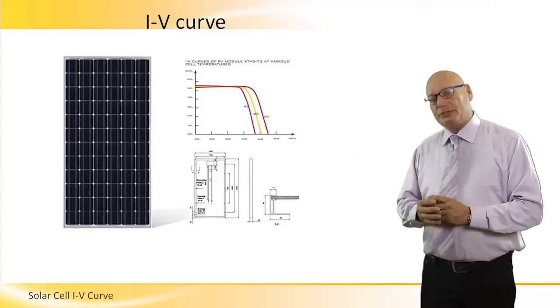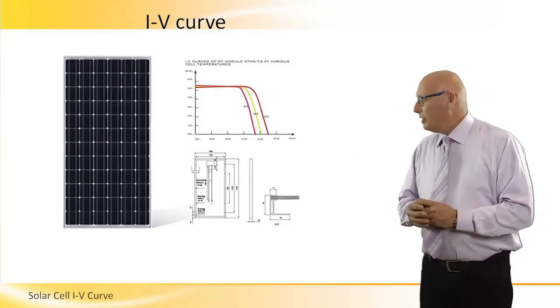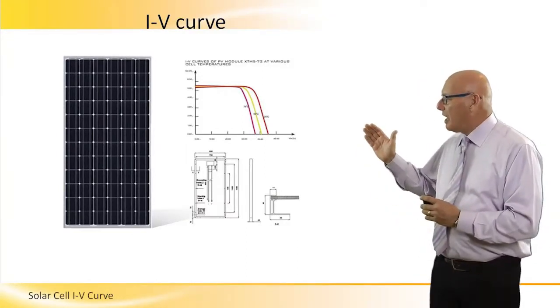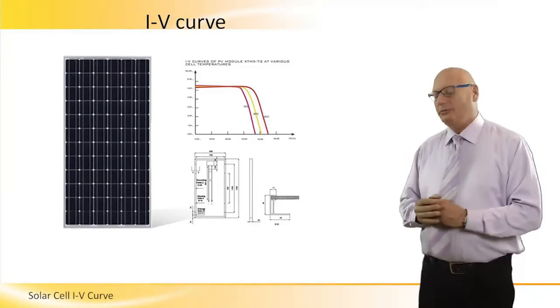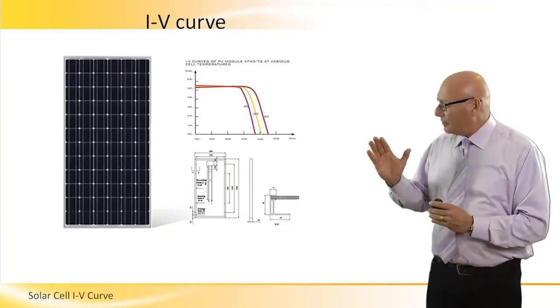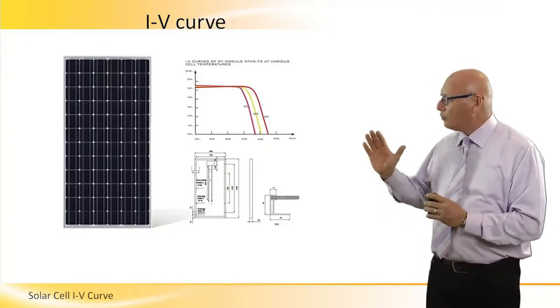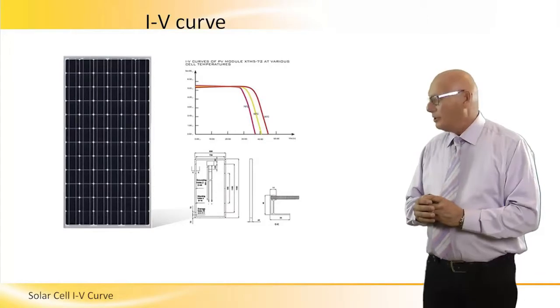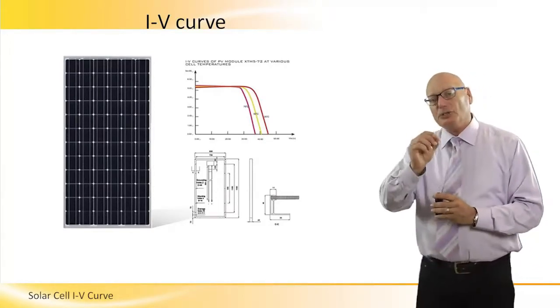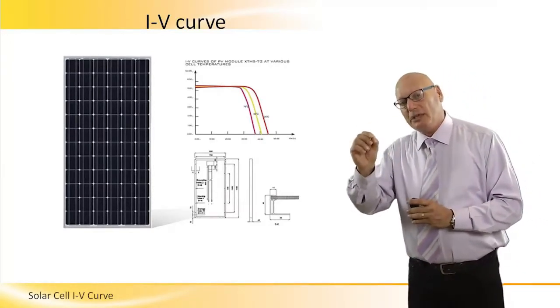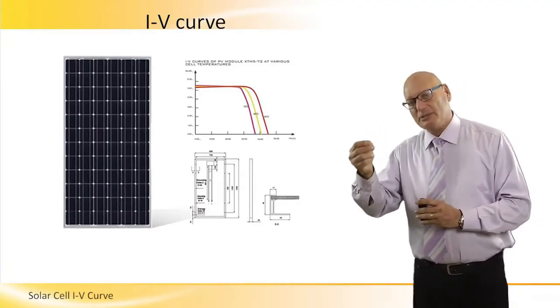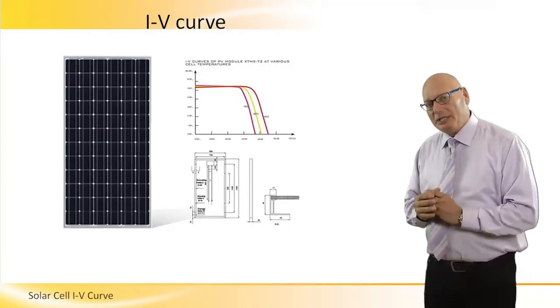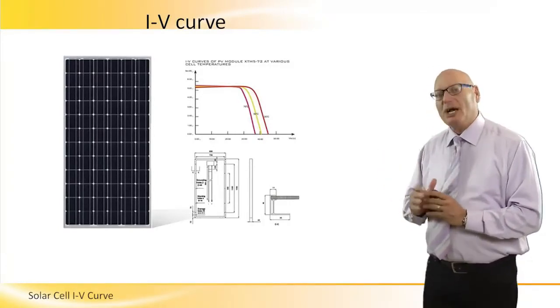The curve varies according to temperature. The higher the temperature, the more left the curve will be. If the curve goes more to the left, that means the multiplication of I times V will come out with a smaller product, meaning less power. So the idea is to keep the temperature as low as possible.